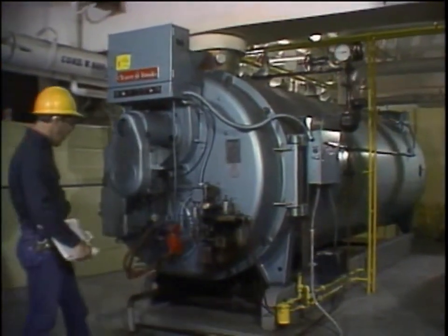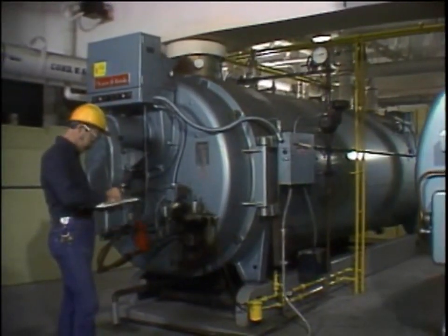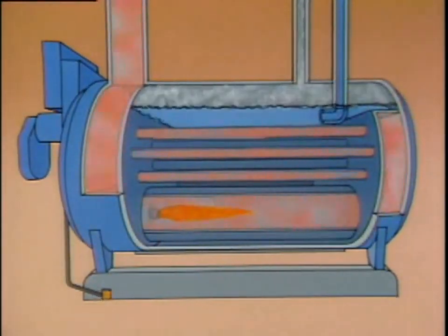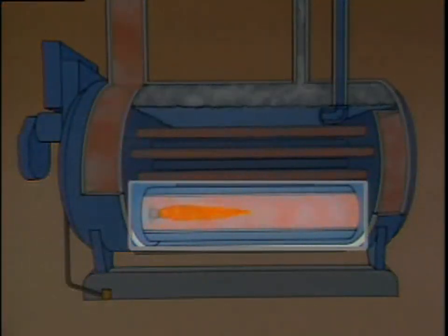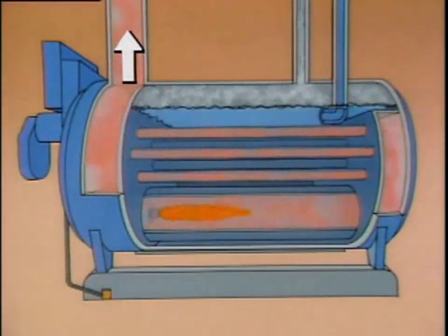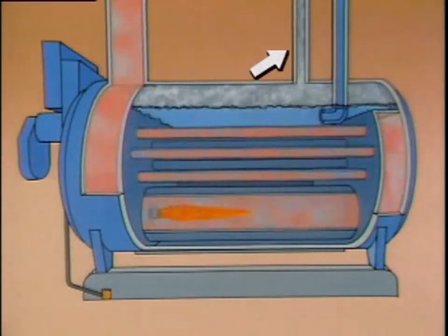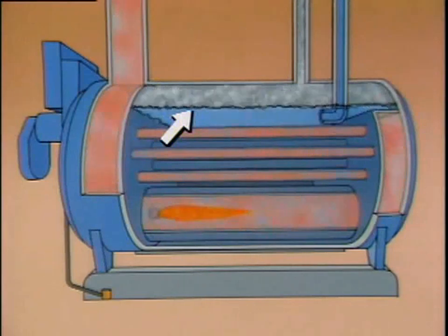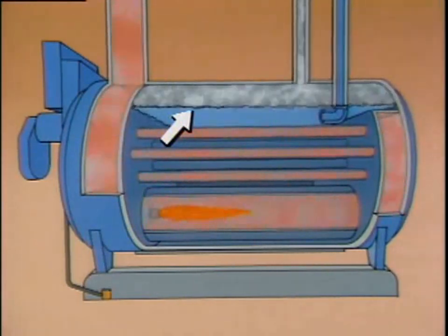Fire tube boilers route hot combustion gases through metal tubes. The tubes run through a shell filled with water. Fire tube boilers vary in design, but most operate under similar principles. A group of horizontal fire tubes routes combustion gases through the boiler. There's also an outlet for the gases, a feed water line, and a steam outlet line. During operation, water enters through the feed water line. The water level is maintained above the fire tubes to protect the tubes from overheating.